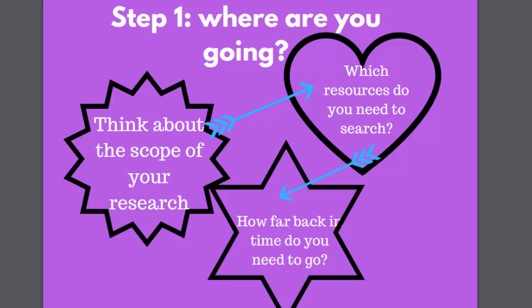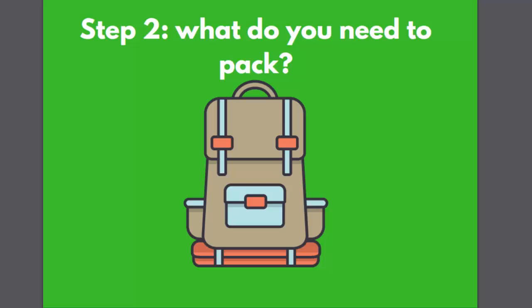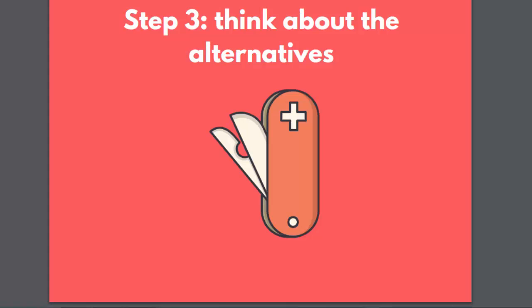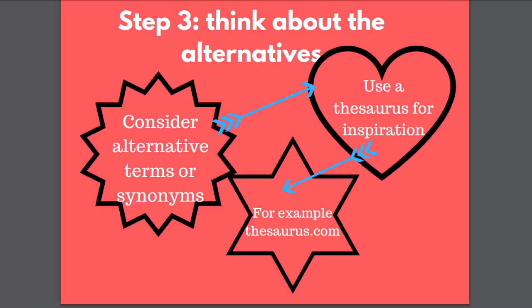Make a checklist to ensure that you don't forget anything. Step two is to identify your key concepts and search terms for your topic. If you need some help with this, brainstorming with someone else on your course can get you started. Step three is to think about alternative terminology or synonyms. You can use a thesaurus for inspiration, or do a search using the first keywords that occur to you and then read through some of the articles you find and jot down alternative terms which come up.